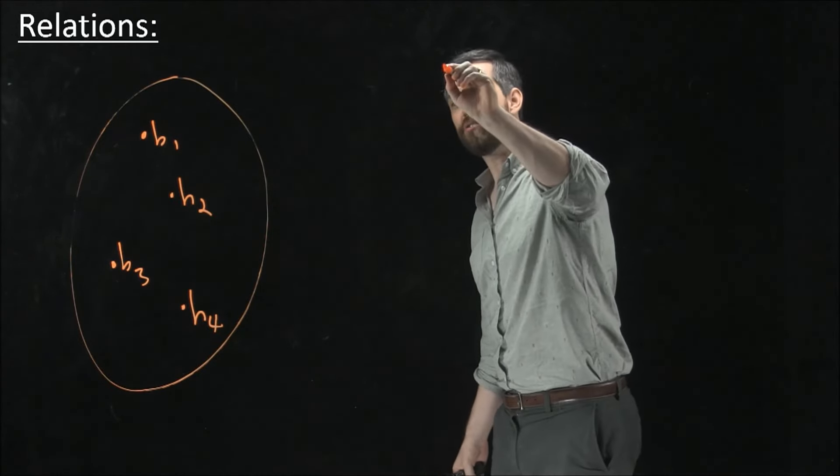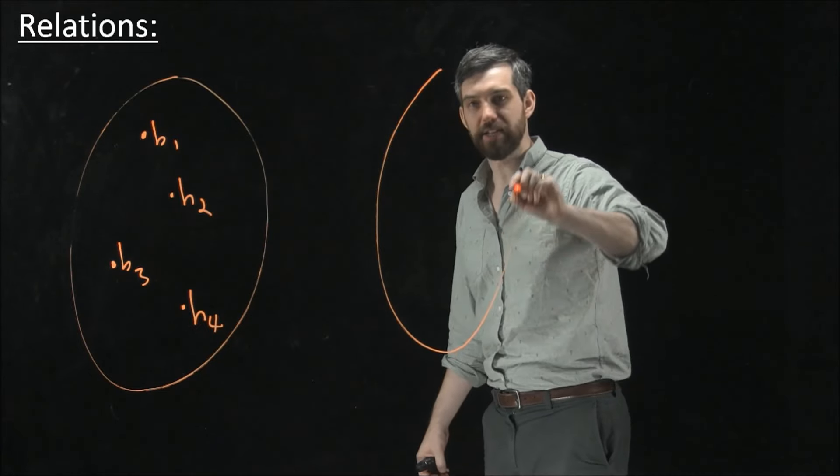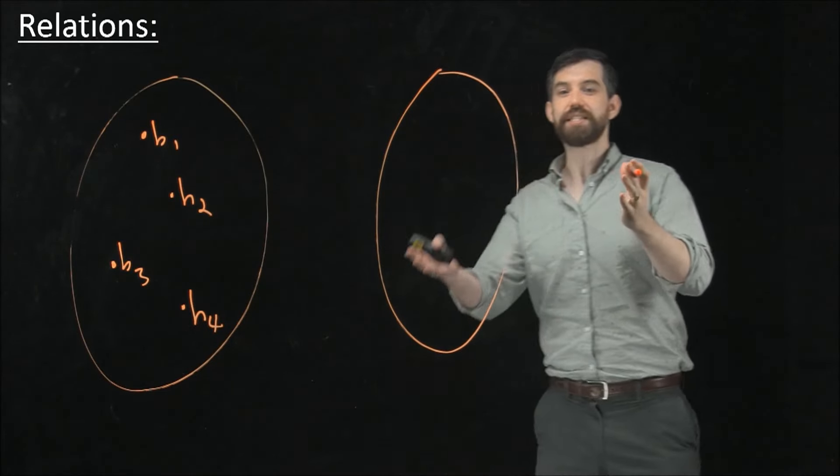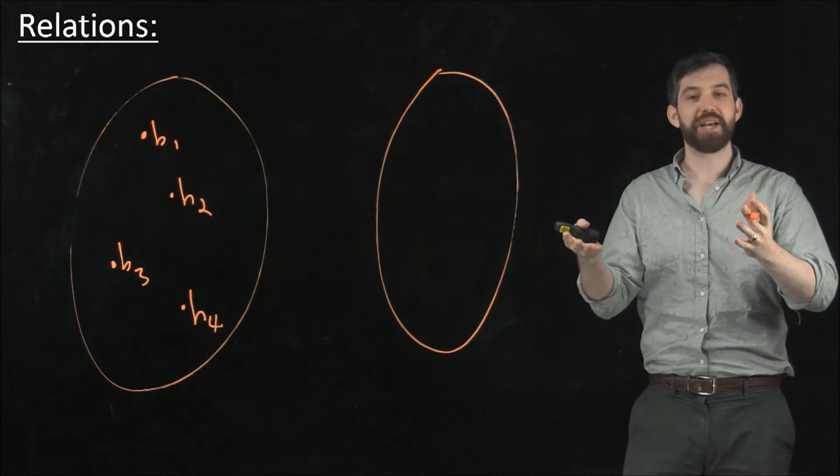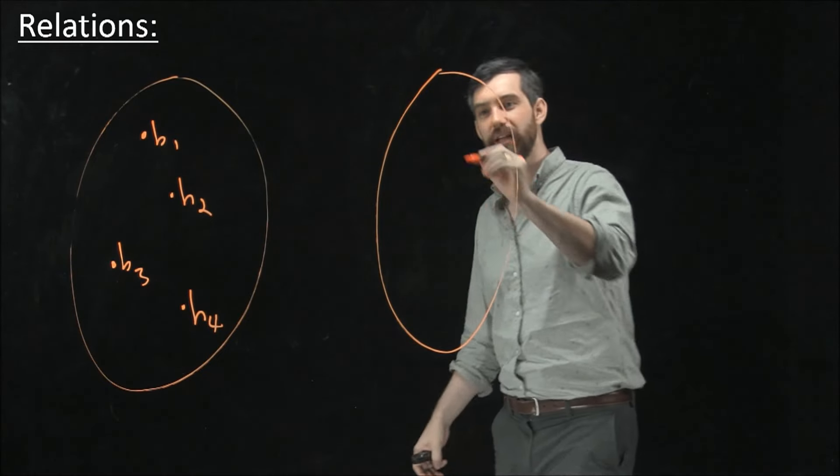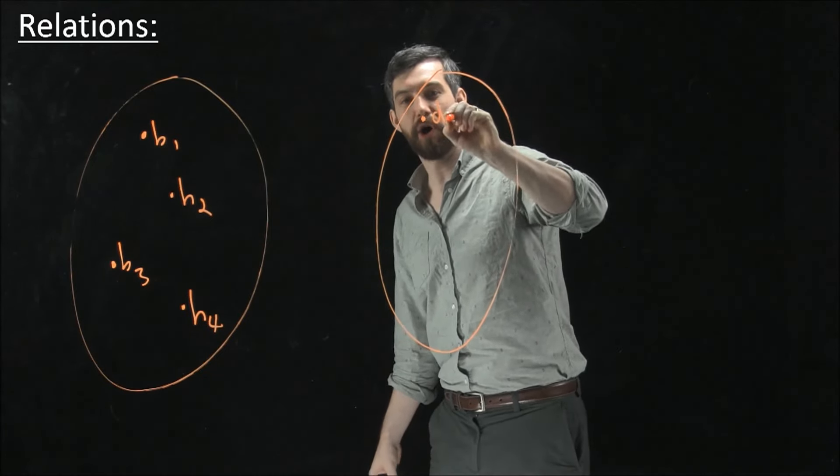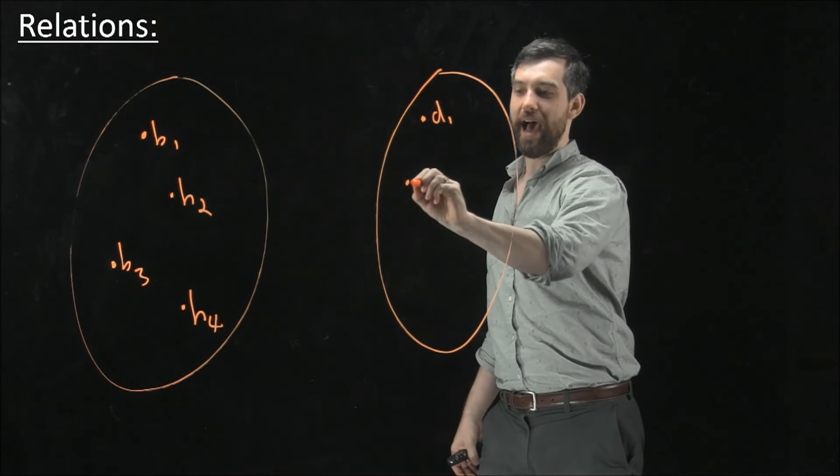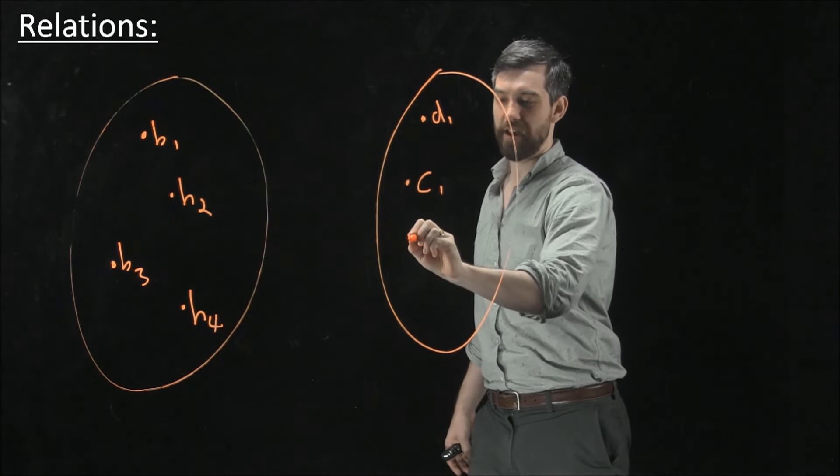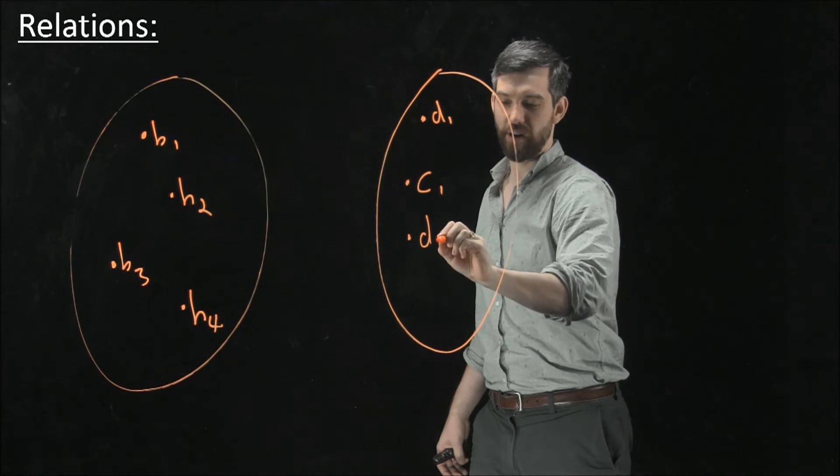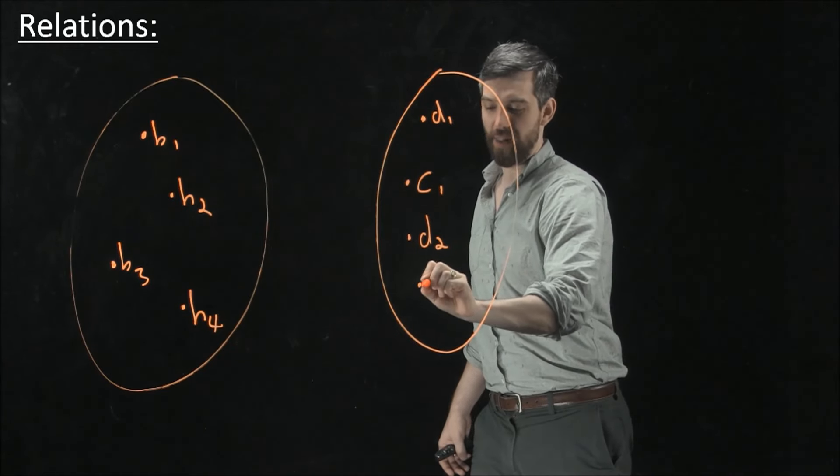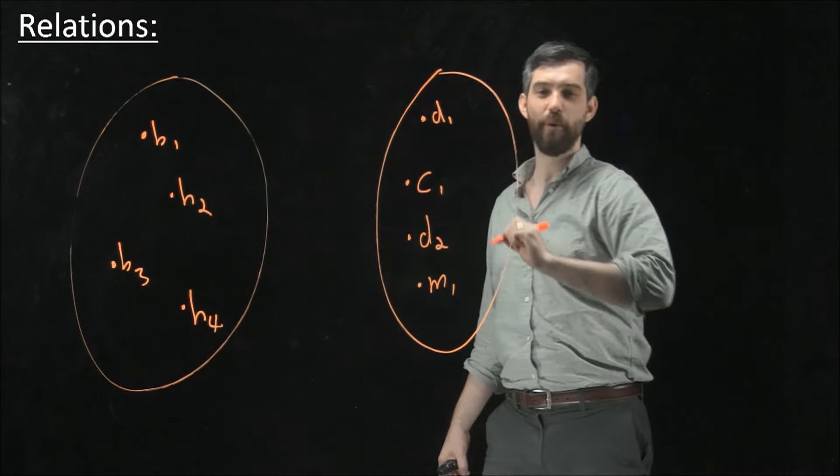And then over here I'm going to draw a different set. This set is going to be a set that contains a bunch of different pets. Maybe I have a dog, I'll call it D1, maybe I have a cat, I'll call it C1, maybe I have another dog, I'll call it D2, maybe I'll have a monkey, I'll call that M1. A bunch of different possibilities like this.